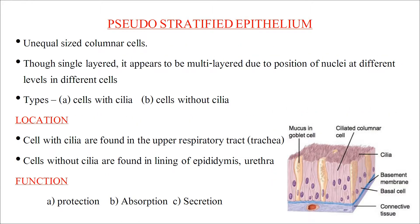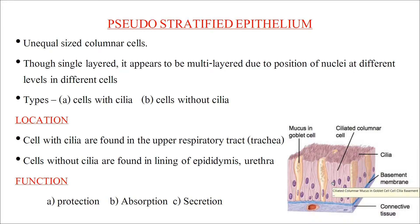Pseudo-stratified epithelium consists of unequal-sized columnar cells. Though arranged in a single layer, they appear to be multilayered because of their unequal size and the positions of their nuclei. They are of two types: cells with cilia, found in the upper respiratory tract (trachea), and cells without cilia, found in the lining of the epididymis and urethra of the male reproductive organ. Their functions are protection, absorption, and secretion.